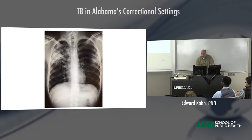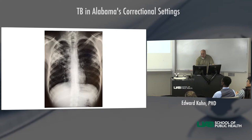Here's what TB looks like on a chest X-ray. That's the heart in the middle, the diaphragms below, the stomach and liver underneath. This is the left lung — you can see a patch here. Lungs should be dark, filled with air, but this area is abnormal — where there's supposed to be air, there's something there. You can't tell it's TB just from looking at it, but you know it's abnormal.